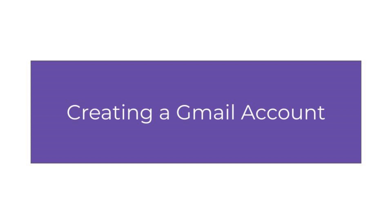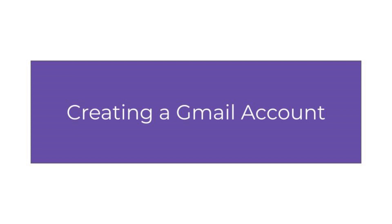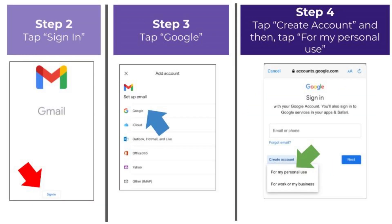Next, we will go over how to create a Gmail account. If you already have a Gmail account, you do not need to go through these steps — we will discuss how to sign in to Gmail shortly. First, tap on the Gmail app on the home screen. If you do not see the Gmail app icon, drag a finger horizontally to view different pages of the home screen. Upon opening the app, tap on Sign In at the very bottom of the screen. Then tap Google towards the top of the screen. Next, tap on Create Account, then tap For My Personal Use.